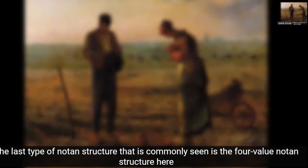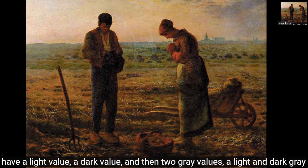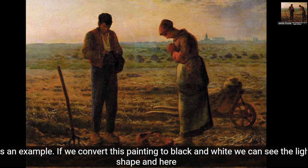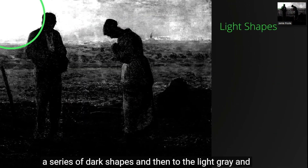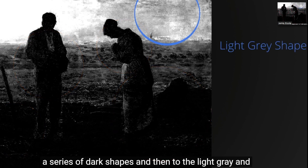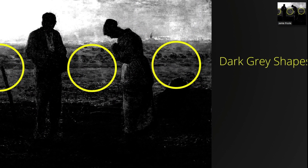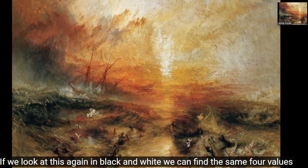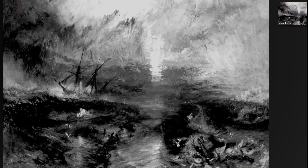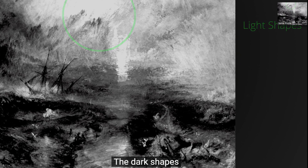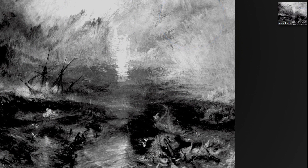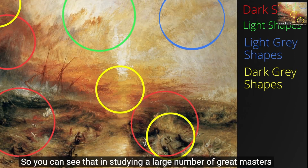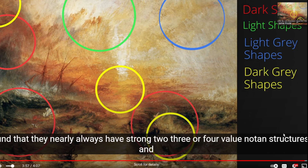The last type of NOTAN structure that is commonly seen is the four-value NOTAN structure. Here we have a light value, a dark value, and then two grey values — a light and a dark grey. If we convert this painting to black and white, we can see the light shape, a series of dark shapes, and then the two greys — the light grey and the dark grey. Let's look at another example — a more complicated painting by Turner. Yet if we look at this again in black and white, we can find the same four values: the light shape, the dark shapes, the light grey, and the dark grey. So in studying a large number of great masters, I found that they nearly always have strong two, three, or four-value NOTAN structures, and these very simple structures create very beautiful paintings.